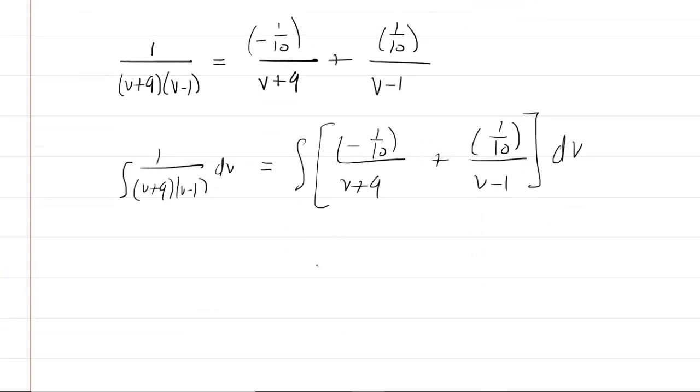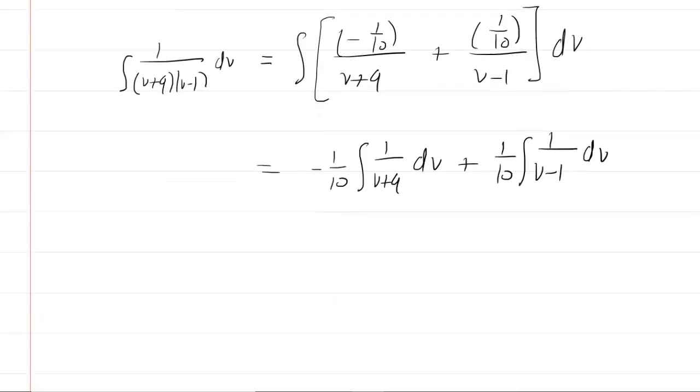Now for the first integral, we can actually factor out the negative 1/10. So we would have negative 1/10 integral of 1 over v plus 9 dv plus the second integral factor out the positive 1/10. And then you'll have integral of 1 over v minus 1 dv.